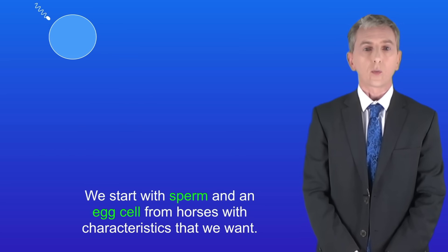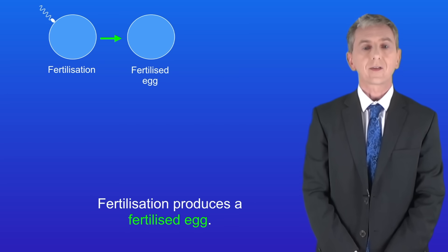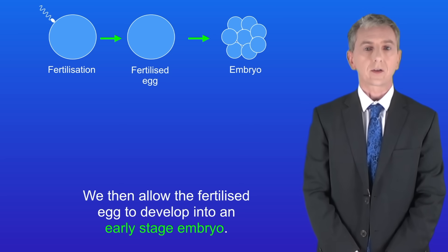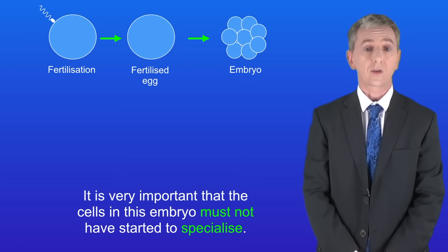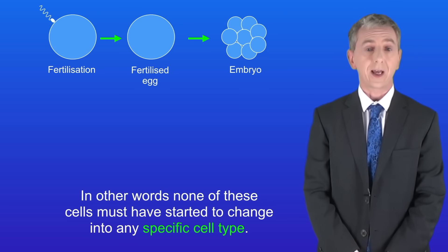We start with sperm and an egg cell from horses with characteristics that we want. Fertilisation produces a fertilised egg. We then allow the fertilised egg to develop into an early stage embryo. It's very important that the cells in this embryo must not have started to specialise — in other words, none of these cells must have started to change into any specific cell type.